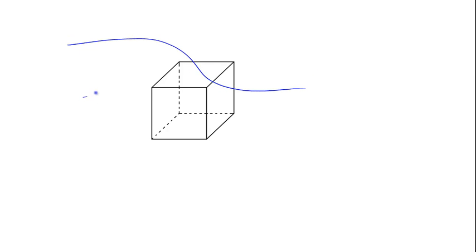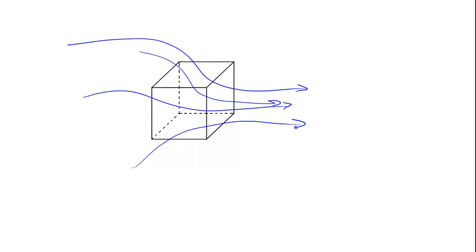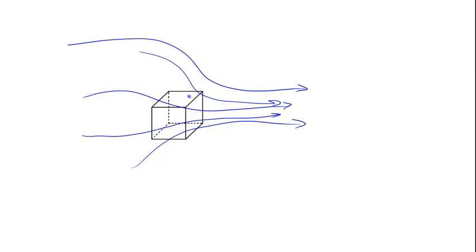Imagine a cube in some fluid flowing in an arbitrary direction — generally left to right, but also with vertical components and some velocity into and out of the screen. The cube is a control volume, and we can imagine a control volume of any arbitrary shape and volume, including one that is infinitesimally small — a cube as small as we could possibly imagine. So let's think about this tiny little cube in effectively an ocean of fluid and zoom in on it.